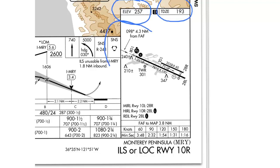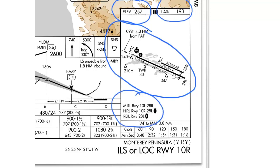Next, you have the airport sketch — a general overview of the airport, its runway configurations, and its general taxiway layout. Next, you have any lighting notes, in this case some runway lights, whether they're pilot controlled or always on. And finally, if the approach involves time, you'll always have a timing section at the bottom, which tells you how long it'll take from the final approach fix to the missed approach point at various air speeds.